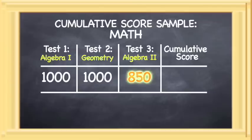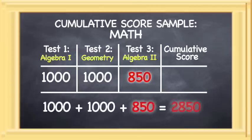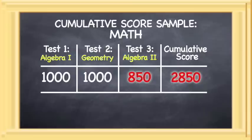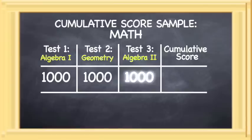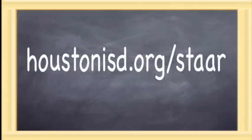in Algebra 2, he scores an 850, which is below the passing standard. The student must retake the Algebra 2 EOC, and he must score at least 1000 on the exam in order to meet the Cumulative Math requirement of 3000 in our example.